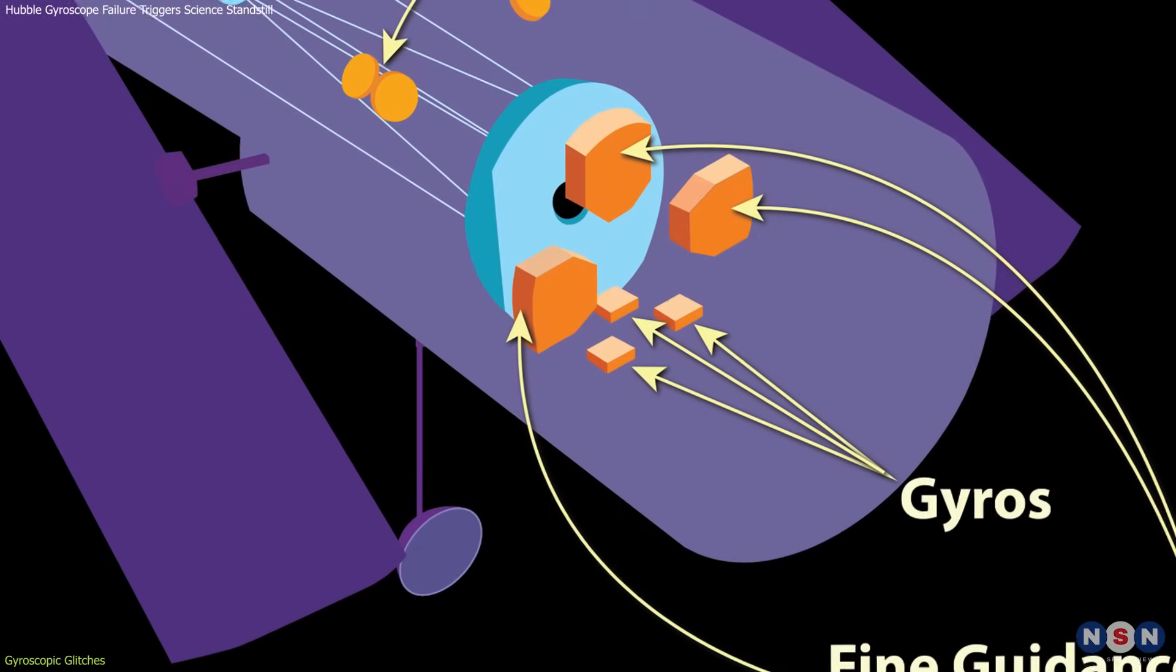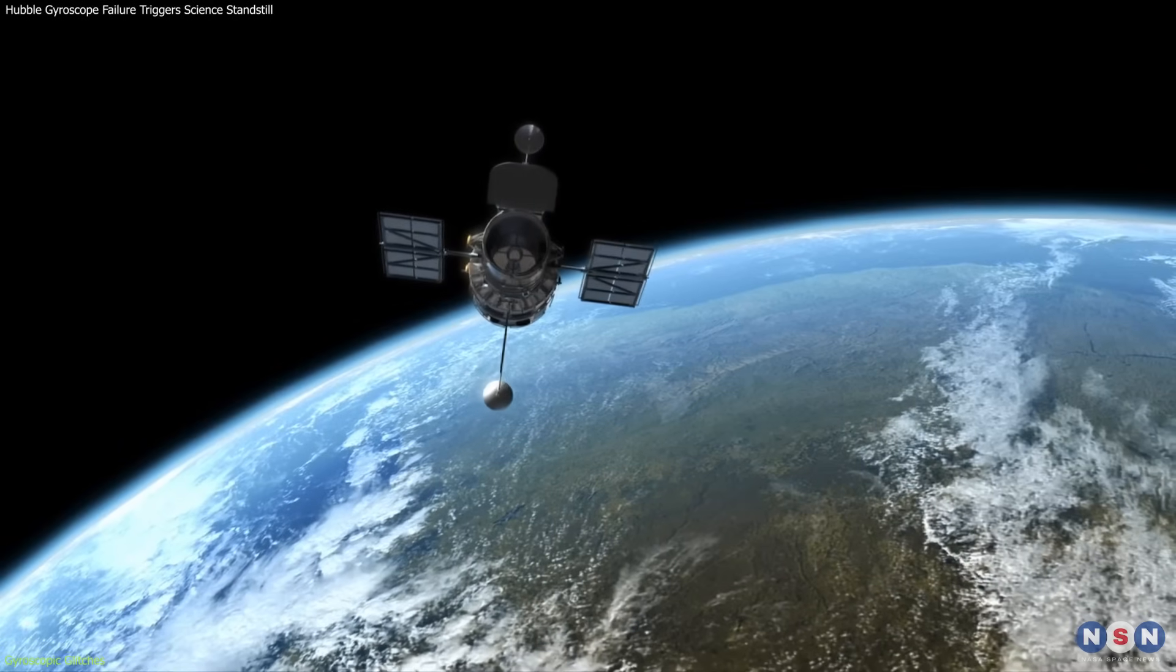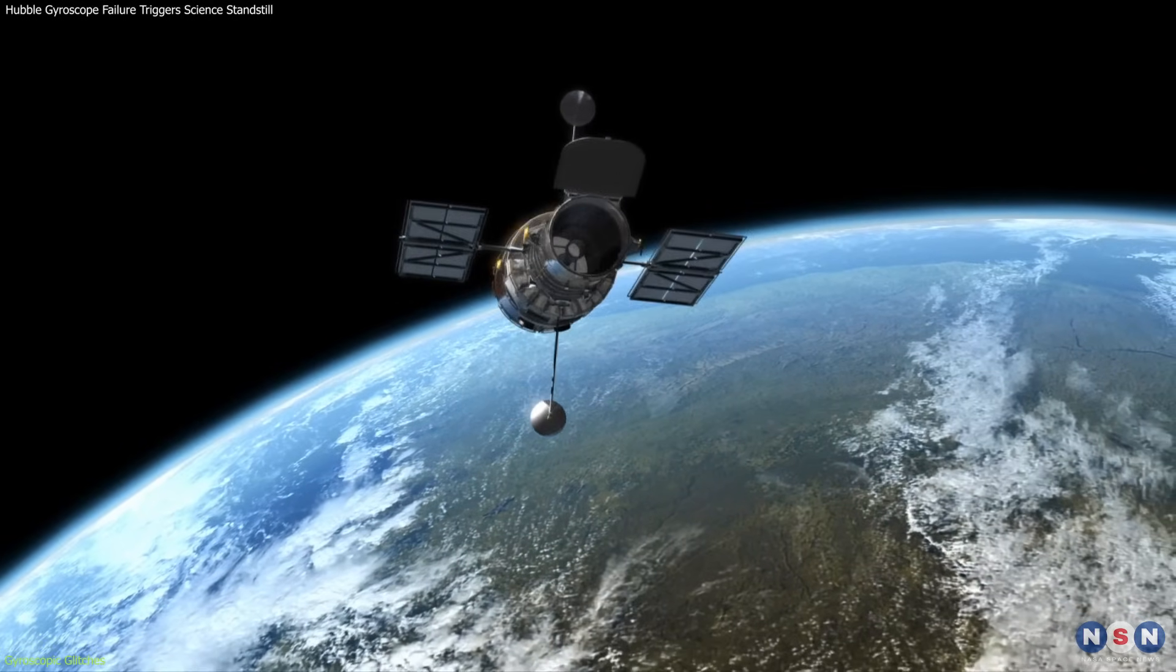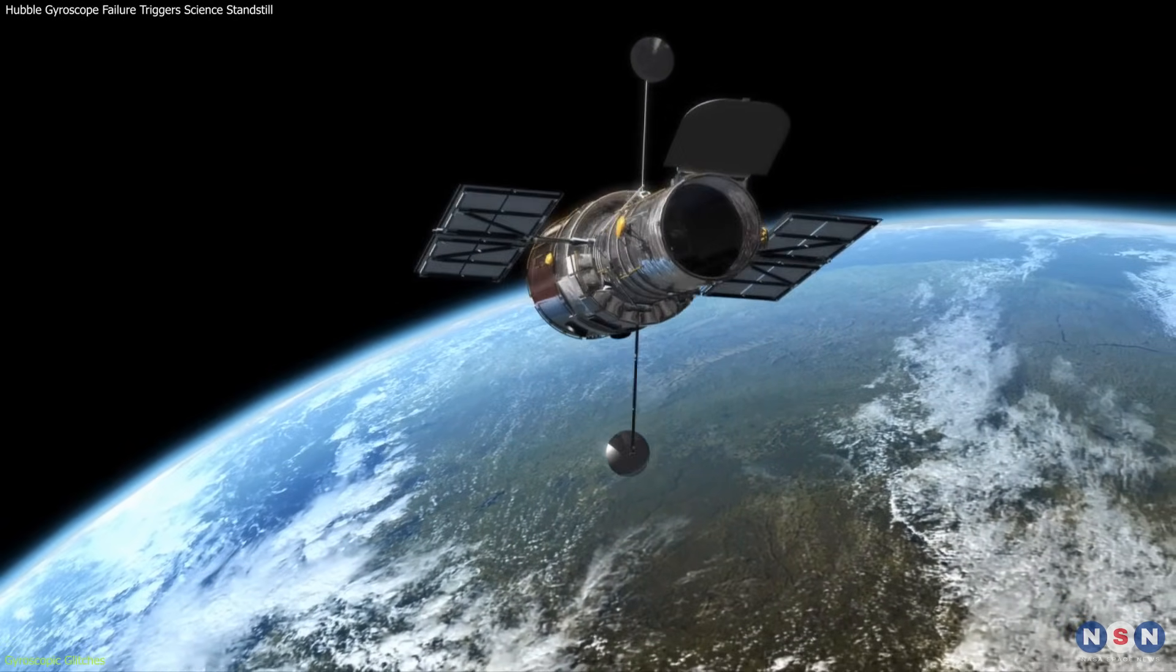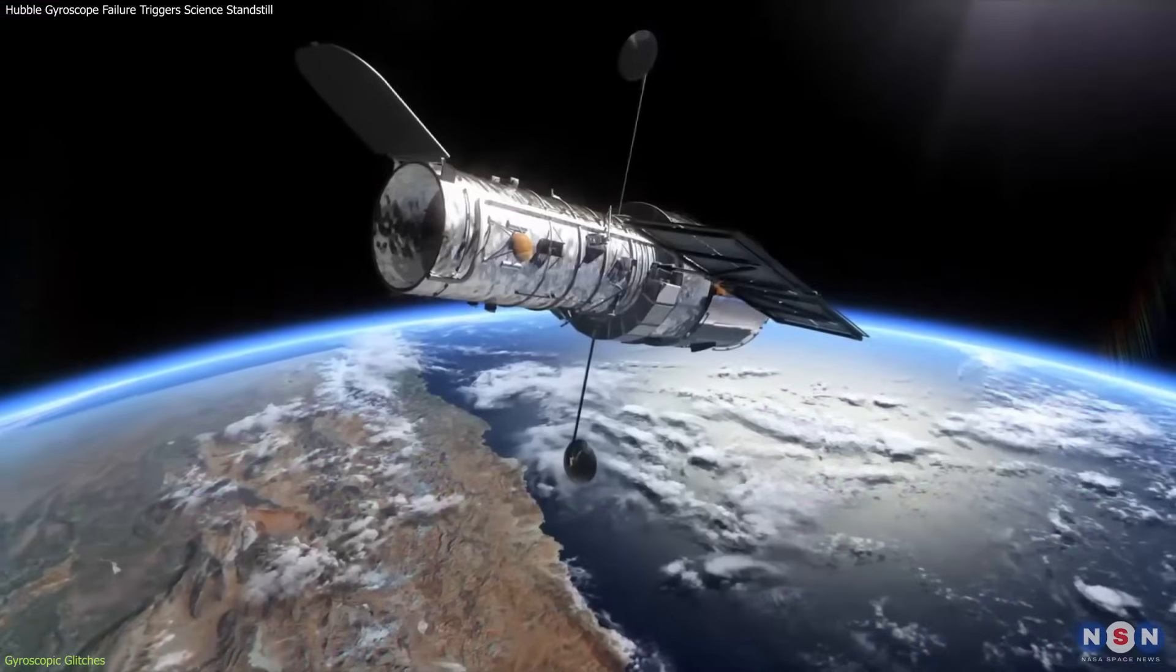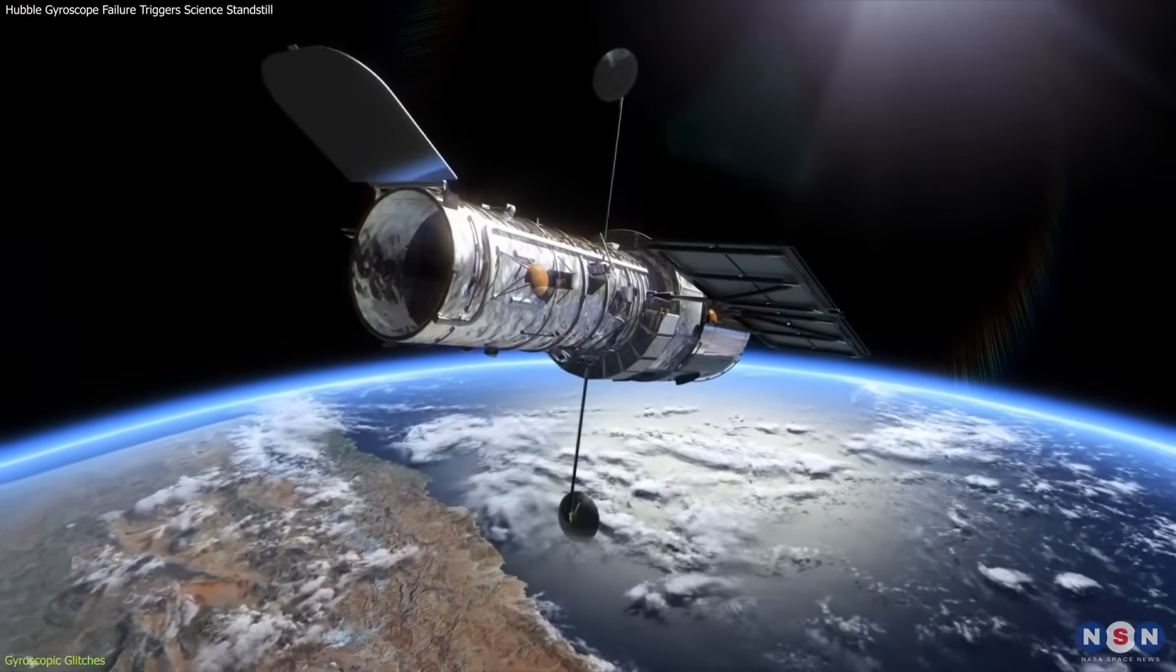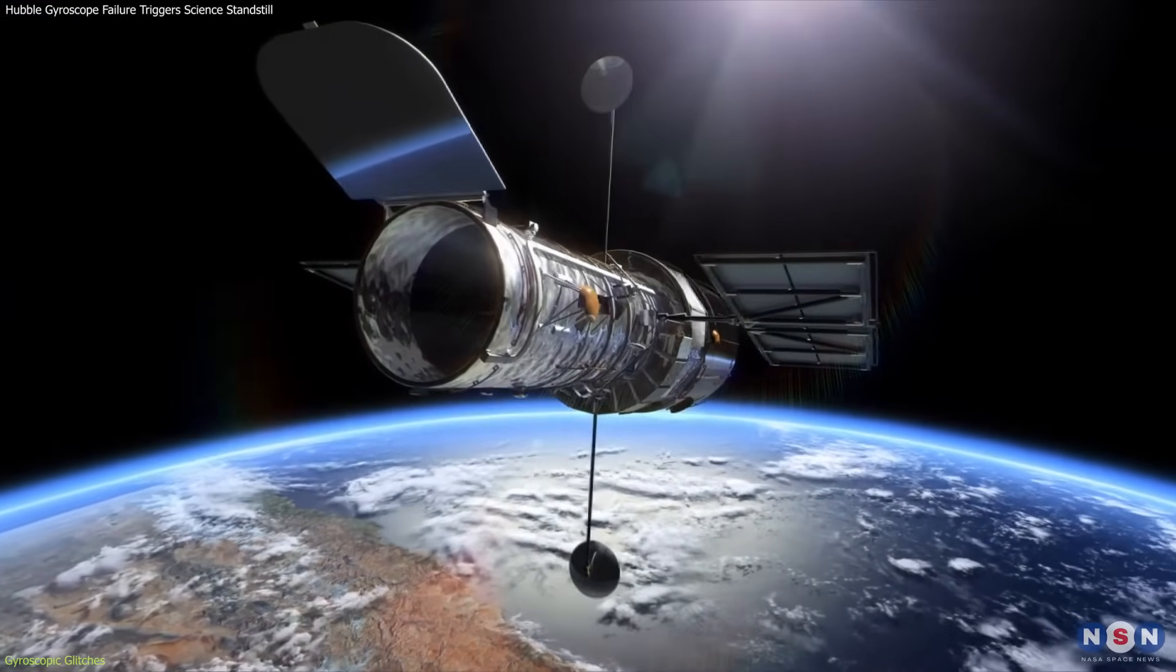Gyroscopes are not just minor components. They are fundamental to the telescope's ability to orient itself in the vast emptiness of space. This malfunction forced Hubble into a protective mode, pausing all scientific observations.